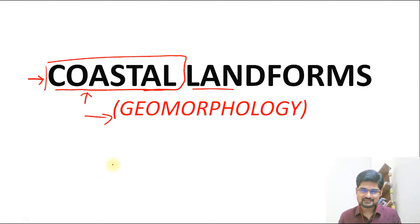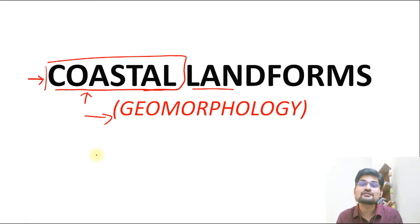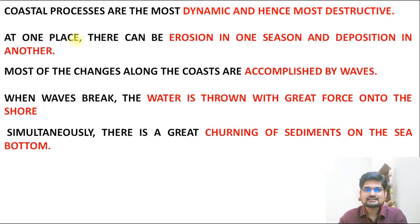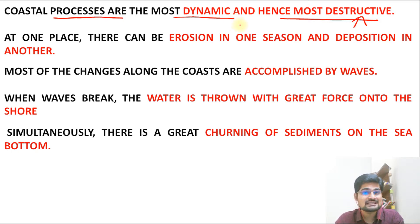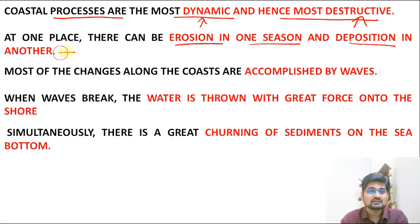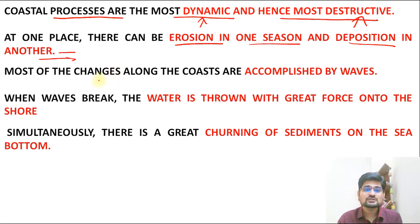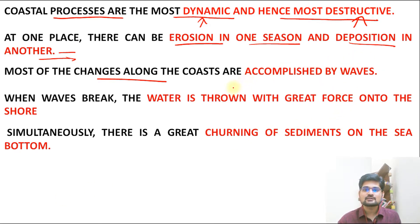The agent here is the sea wave. Wave action is one of the most important agents of both erosion and deposition in these landforms, and the nature of the coast is equally important. Coastal processes are the most dynamic and hence most destructive — sea waves, tsunamis, and many other things keep happening. At one place there can be erosion in one season and deposition in another, making waves one of the most important dynamic features.